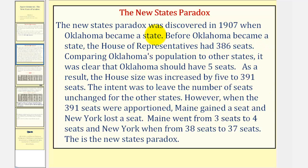The new states paradox was discovered in 1907 when Oklahoma became a state. Before Oklahoma became a state, the House of Representatives had 386 seats. Comparing Oklahoma's population to other states, it was clear that Oklahoma should receive five seats. As a result, the house size was increased by five to 391 seats. The intent was to leave the number of seats unchanged for the other states. However, when the 391 seats were apportioned, Maine gained a seat and New York lost a seat. Maine went from three seats to four seats, and New York went from 38 seats to 37 seats. This is the new states paradox.